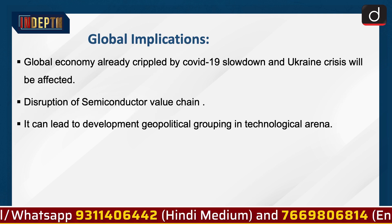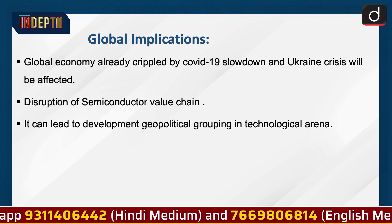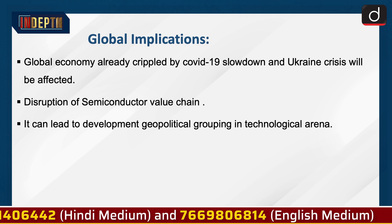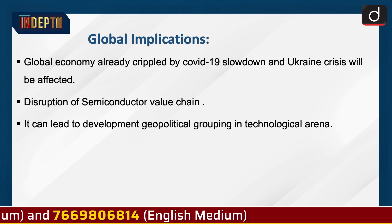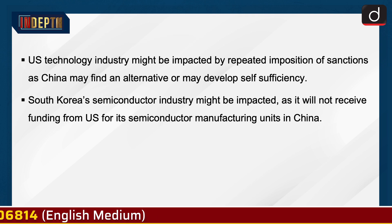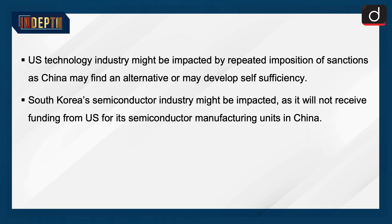Global implications: The global economy, already crippled by the COVID-19 slowdown and the Ukraine crisis, will be further affected. Disruption of the semiconductor value chain can lead to geopolitical grouping in the technological arena. The US technology industry might be impacted by repeated imposition of sanctions, as China may find an alternative or develop self-sufficiency. South Korea's semiconductor industry might also be impacted, as it will not receive funding from the US for its semiconductor manufacturing units in China.